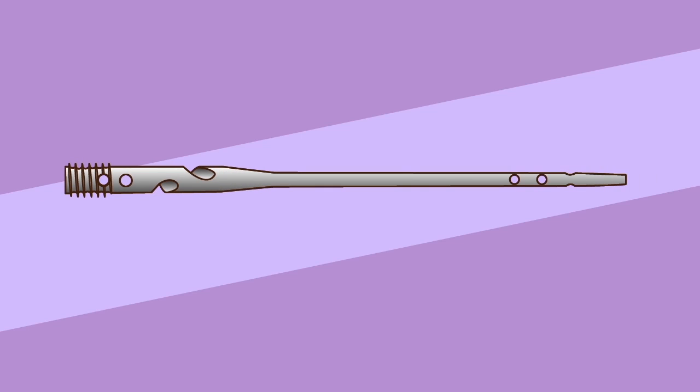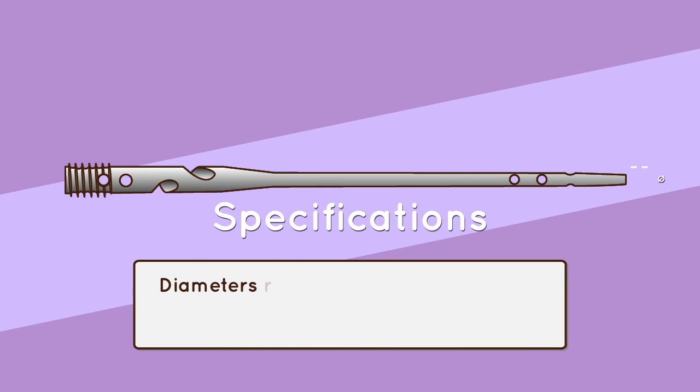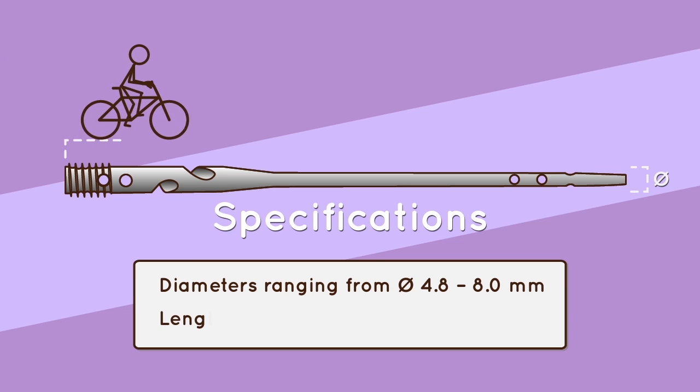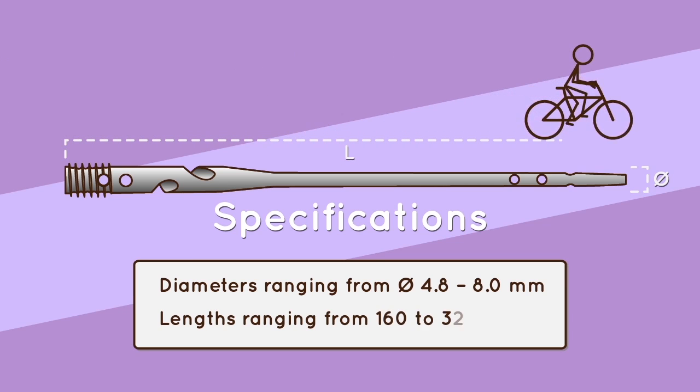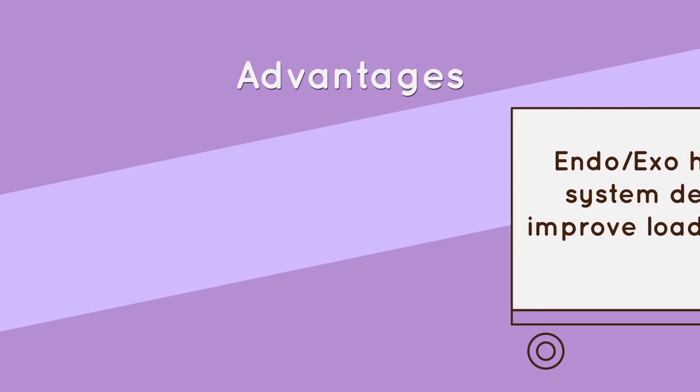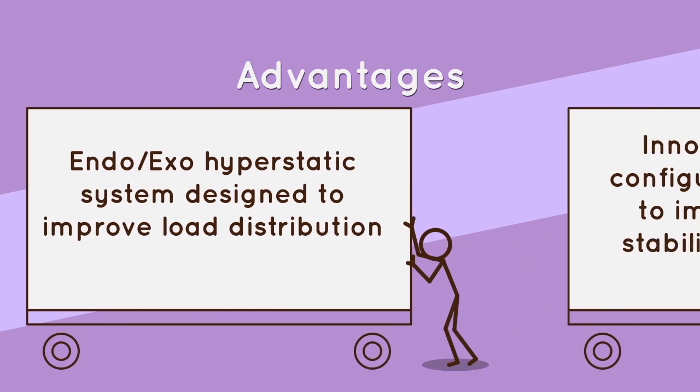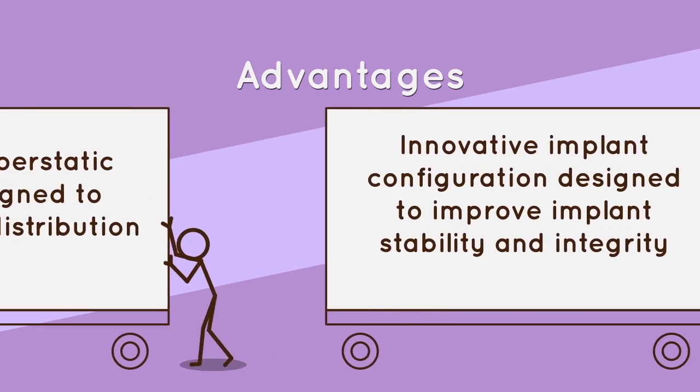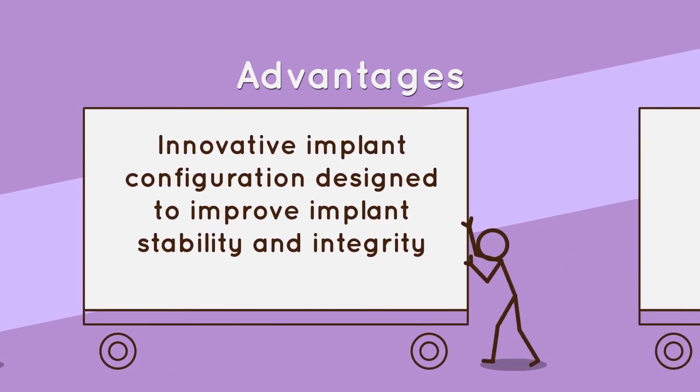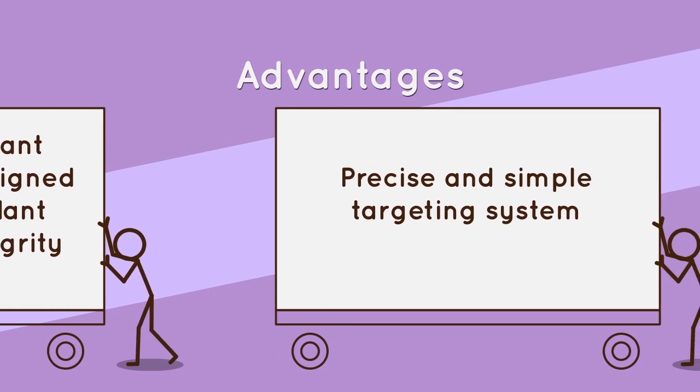Specifications and advantages: ranging from 4.8 to 8 millimeters, lengths ranging from 160 to 320 millimeters, endoexo hyperstatic system designed to improve load distribution, innovative implant configuration designed to improve implant stability and integrity, precise and simple targeting system.